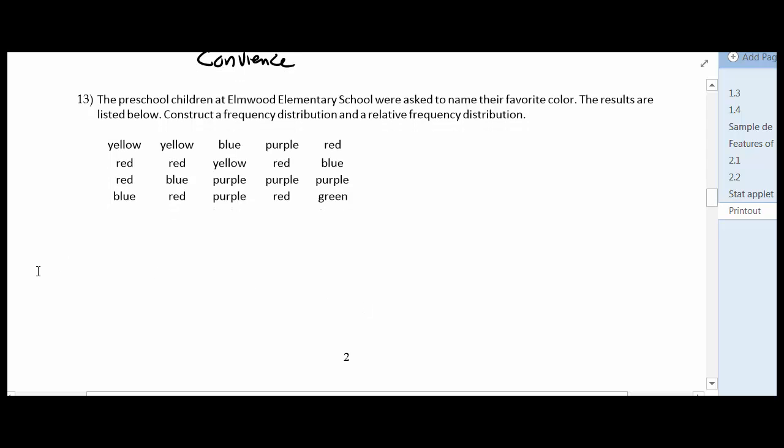And then the next part of our exam looks at data and how to organize it. And in this case, we're going to draw what's called a frequency distribution and then a relative frequency distribution. So this first case, we're just organizing data. We're not necessarily looking at pictures of it. So I'm going to make a list of my data. So I see yellow, red, blue, purple, and green.